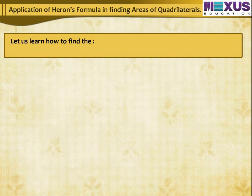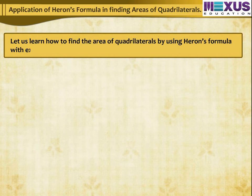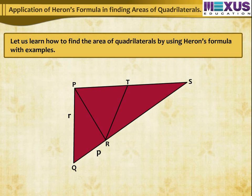Let us learn how to find the area of quadrilaterals using Heron's formula with examples. Kamla has a triangular field with sides 340m, 300m, and 460m where she grew wheat. In another triangular field with sides 340m, 420m, and 500m adjacent to the previous field, she wanted to grow maize and onions.